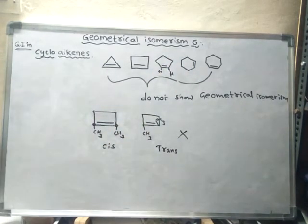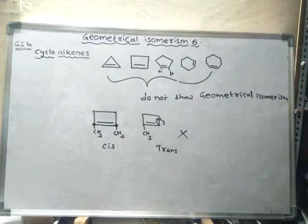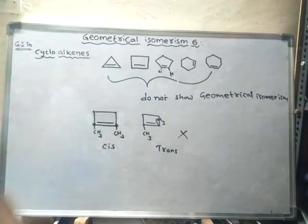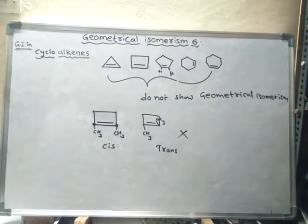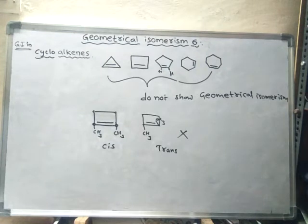Only the cis form is possible, and the trans form is not possible. For a compound to exhibit geometrical isomerism, it must exist in both cis and trans forms. Since these cycloalkenes only show cis form, they do not show geometrical isomerism. All cycloalkenes having less than 8 carbon atoms do not show geometrical isomerism.